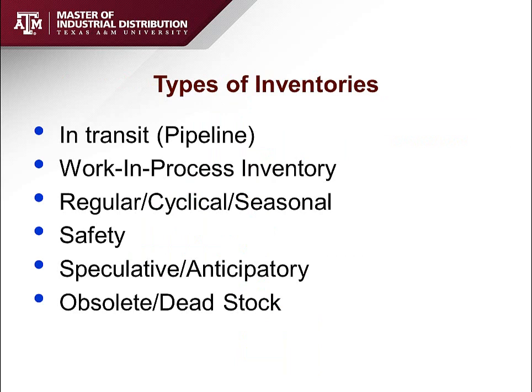There are different types of inventories, usually determined based on the use of inventory or where they are in a supply chain. In-transit or pipeline inventory means the product is on the move during transportation. Work-in-process (WIP) inventory refers to semi-finished products waiting to be further processed — you may see these at a manufacturing facility waiting for the next machine.